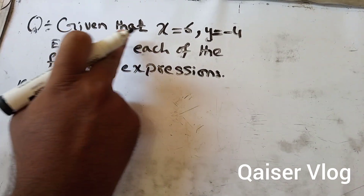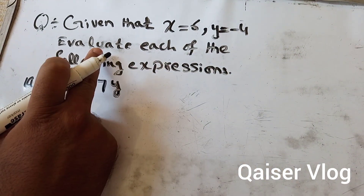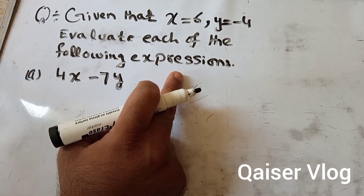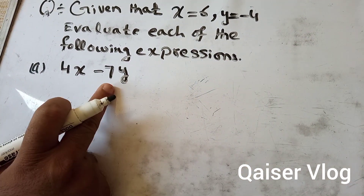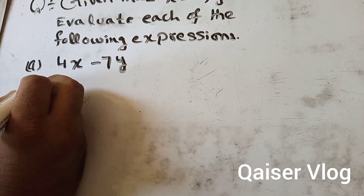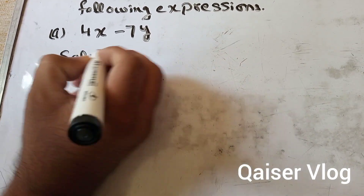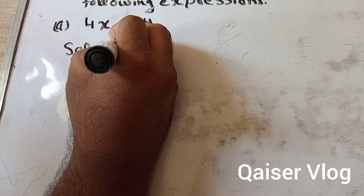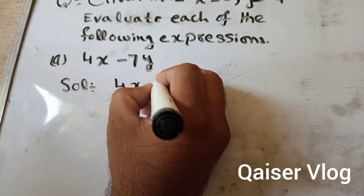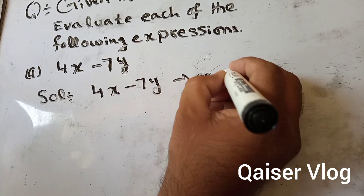We have to solve this question: given that x = 6 and y = -4, evaluate each of the following expressions. The expression is 4x - 7y. Let's solve this — we call it equation 1.